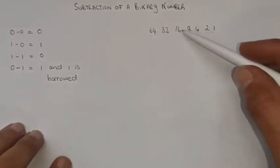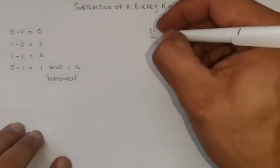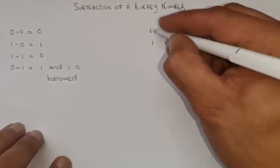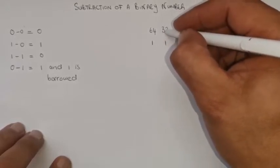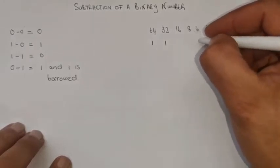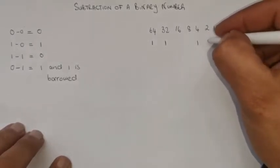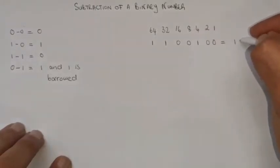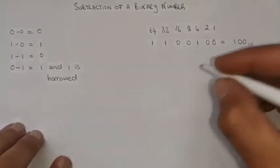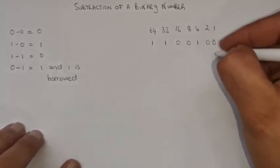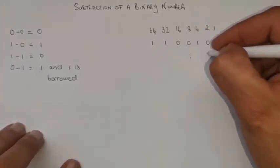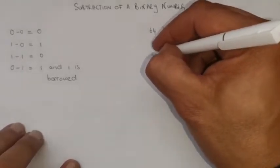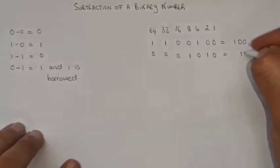For 100 in binary, I'll use 64 plus 32, which gives 96, then add 4 to get 100 — the remaining positions are zeros. For 10 in binary, I need 8 plus 2, with the other positions as zeros. So that equals 10 in decimal.